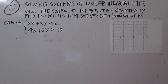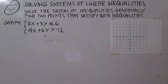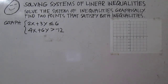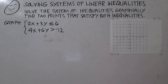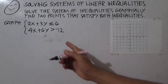Solving systems of linear inequalities: solve the system of inequalities graphically and find two points that satisfy both inequalities. Graph 2x plus 3y is less than or equal to 6, and 4x plus 6y is greater than negative 12. First, you graph the first inequality.